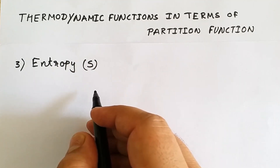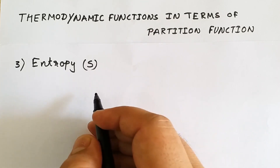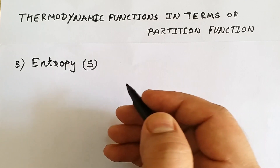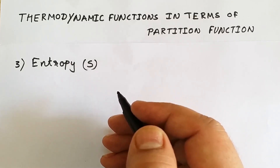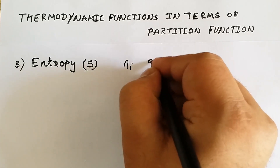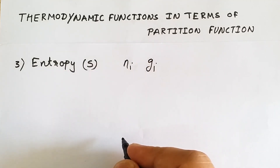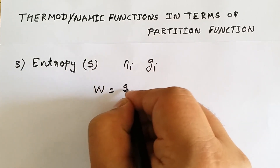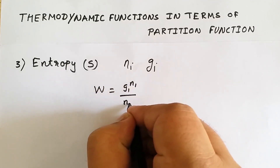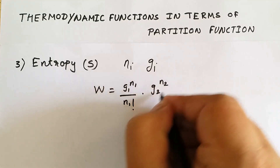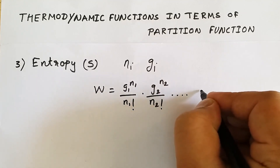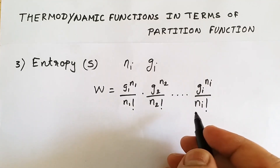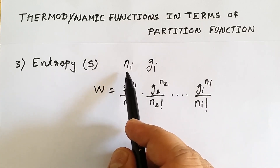In order to derive entropy, we will consider a system consisting of Ni number of particles, where all the particles are indistinguishable, and those particles are distributed amongst several energy states. So we are taking Ni number of particles distributed amongst gi states. For such a system, the thermodynamic probability W can be written as: g1 raised to n1 upon n1 factorial, into g2 raised to n2 upon n2 factorial, and so on up to gi raised to ni upon ni factorial.